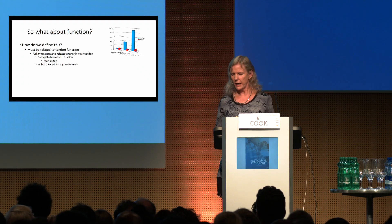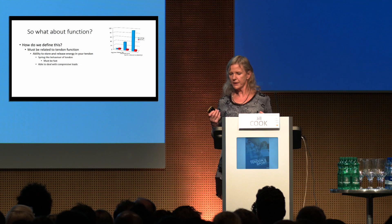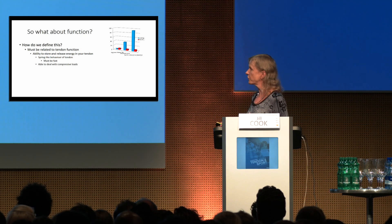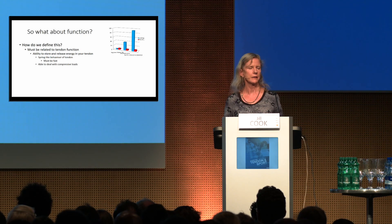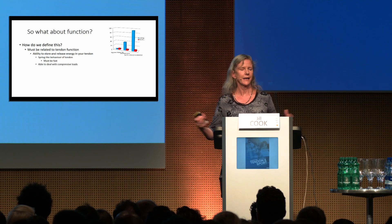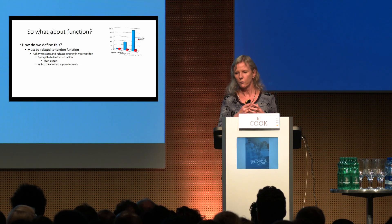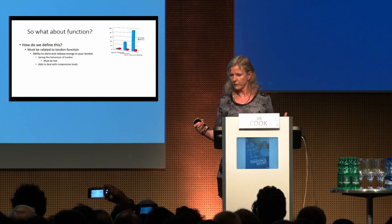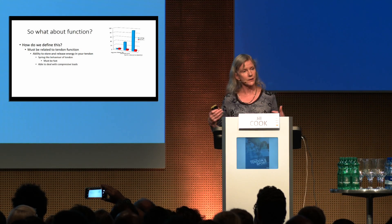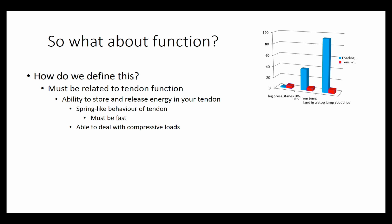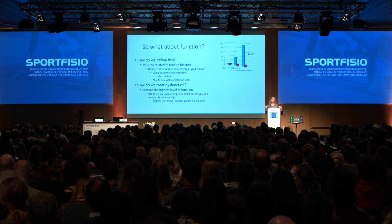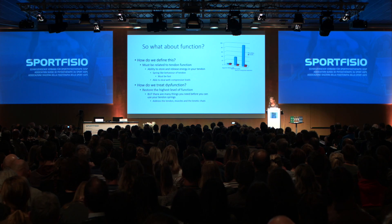How do we define function? It must be related to maximum tendon function. To really restore function in tendons, we must do very fast loading at some point in our rehabilitation — we can't just do slow loading. We must get the tendon able to take very fast loads, which is what allows us to use the tendon as a spring for energy storage. We must also allow the tendon to deal with compressive loads and integrate that into a rehabilitation program.